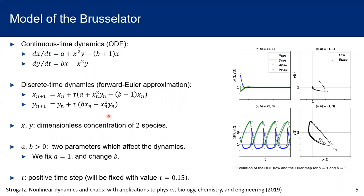Furthermore, we could also use forward Euler approximation to change the model as discrete time dynamics, where tau here is a positive time step, and we will fix its value as 0.15 for further discussion.